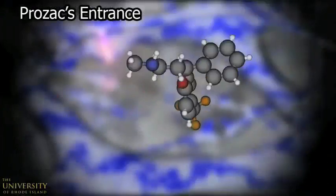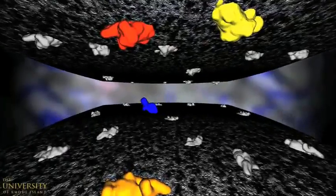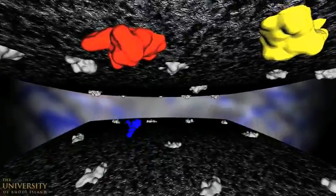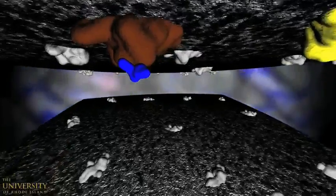This is Prozac, a small chiral molecule. Once Prozac locates and binds to the presynaptic reuptake protein, the protein's gating mechanism is disabled and no longer able to transport serotonin.